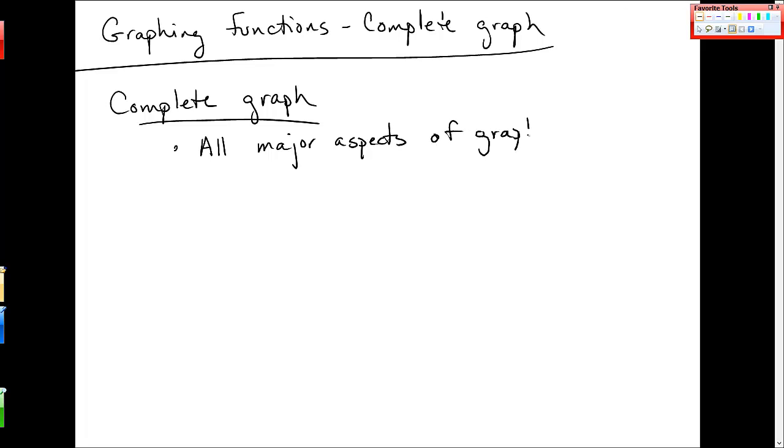By aspects, I mean turns, twists, things like that. It should show all x and y intercepts. From the graph, as much as you can, the domain and range should be clear.